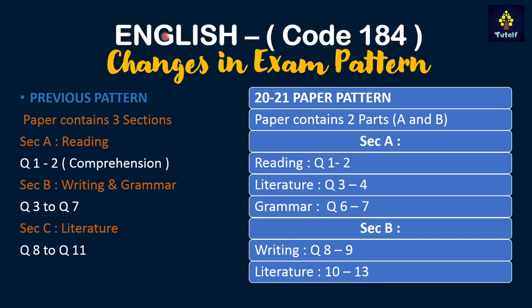Next is English with code 184. Previously the paper contained three sections: Section A was for reading, Section B was writing and grammar, and Section C was literature. In Section A there were two questions of comprehension type — one was a comprehension passage and one was a poem.